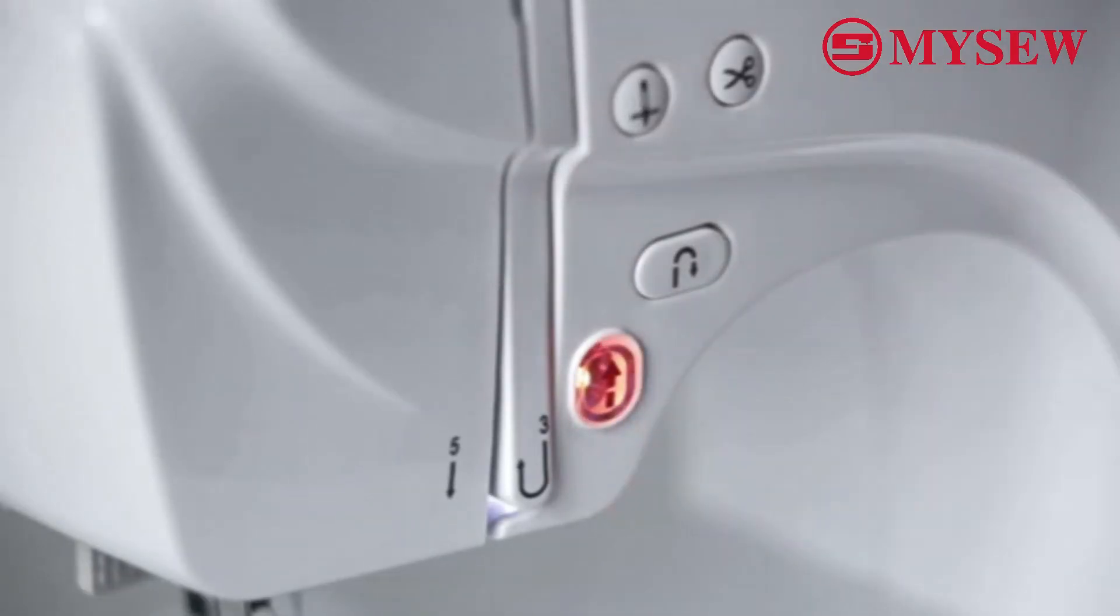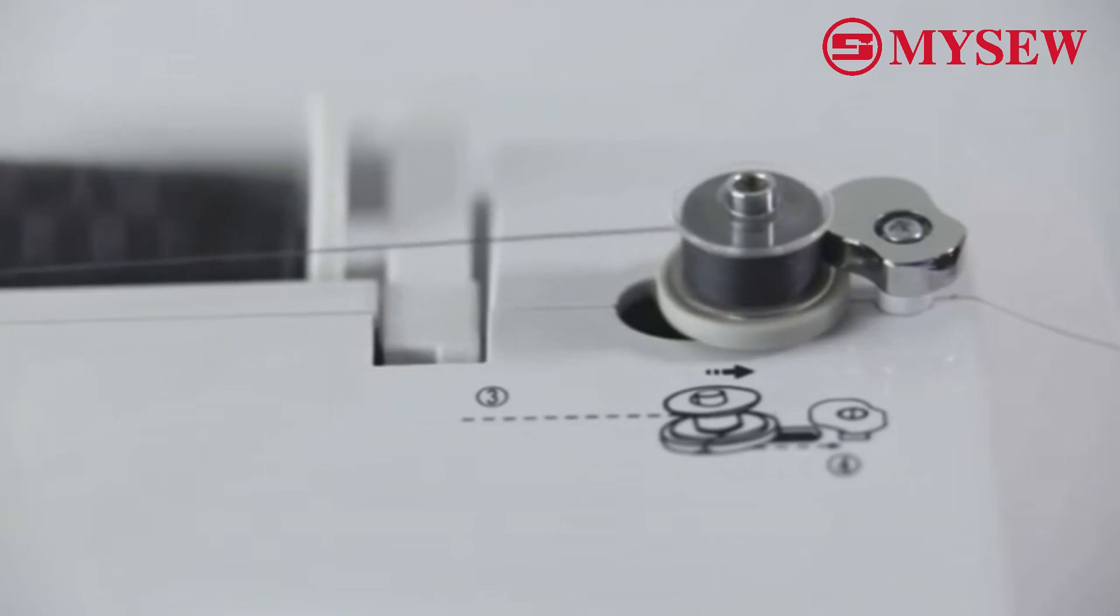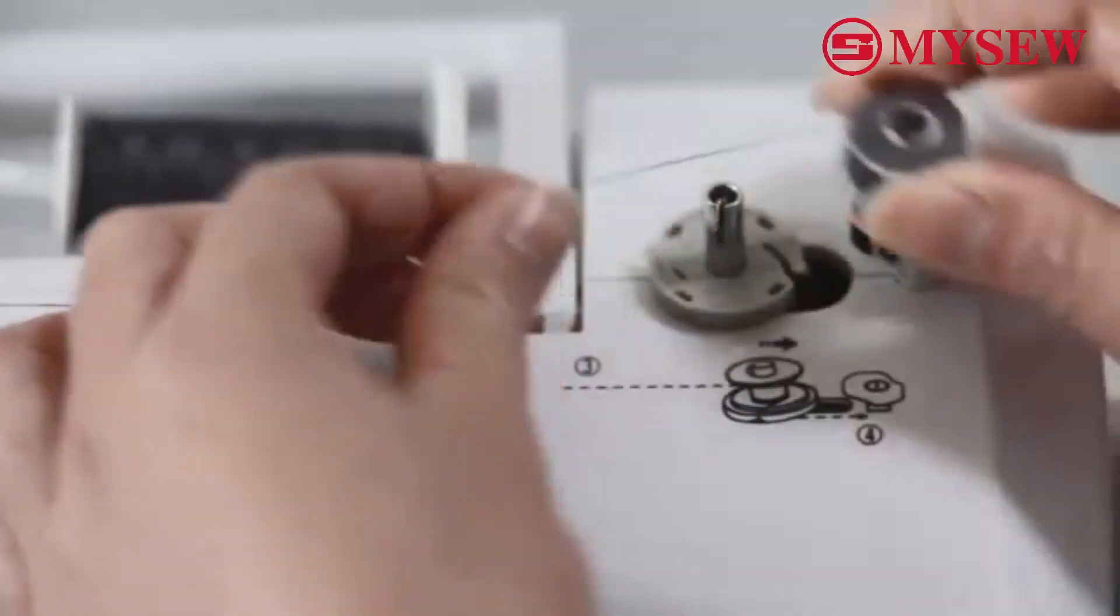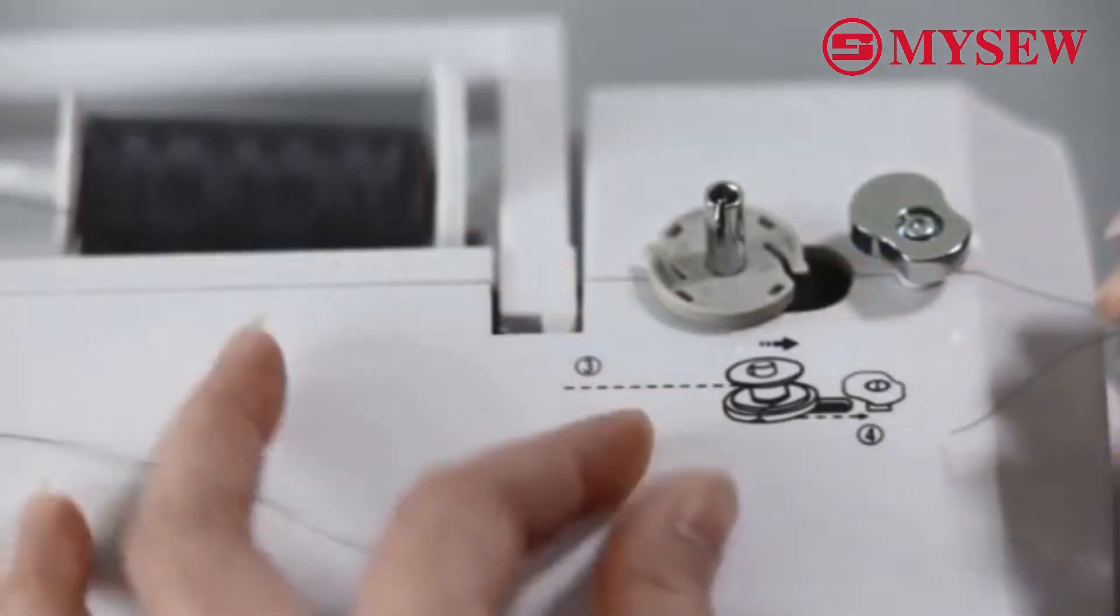Press the Start or Stop button again to stop the winding. Push the spool back to the left. Remove the shuttle core and cut the thread.